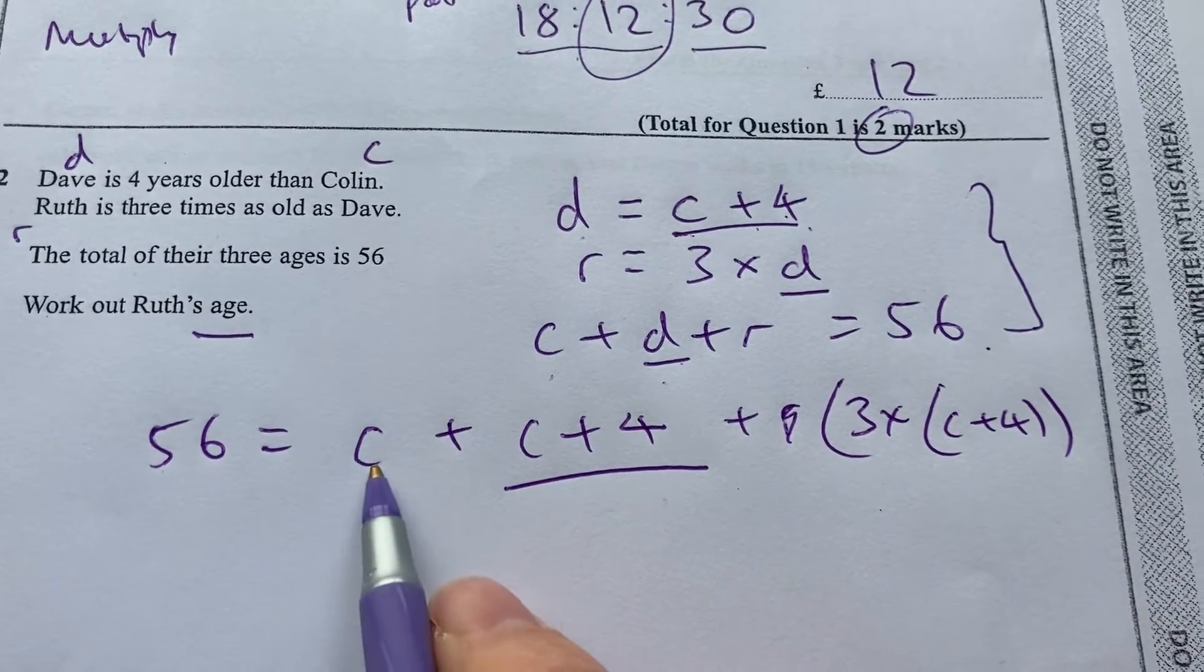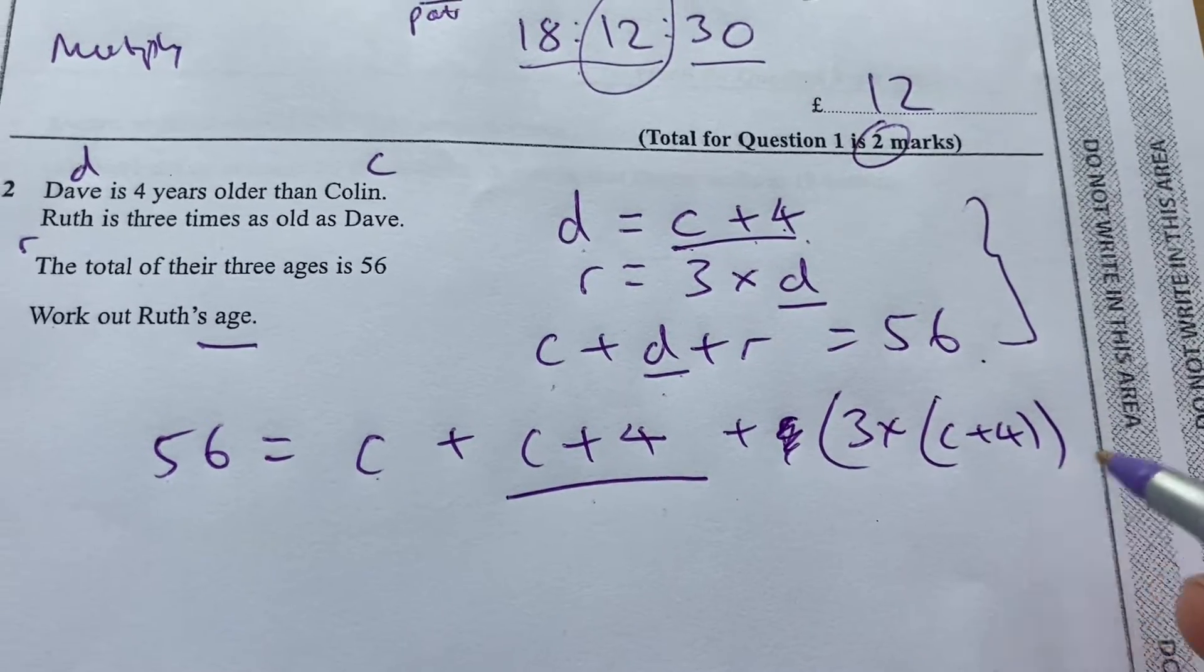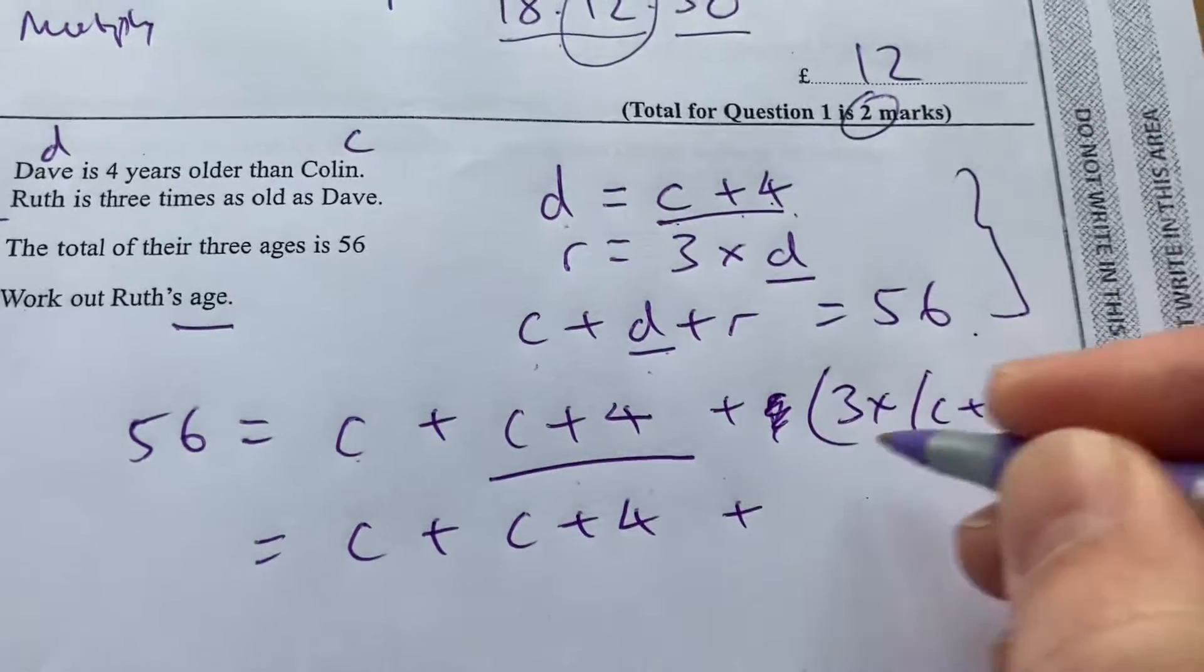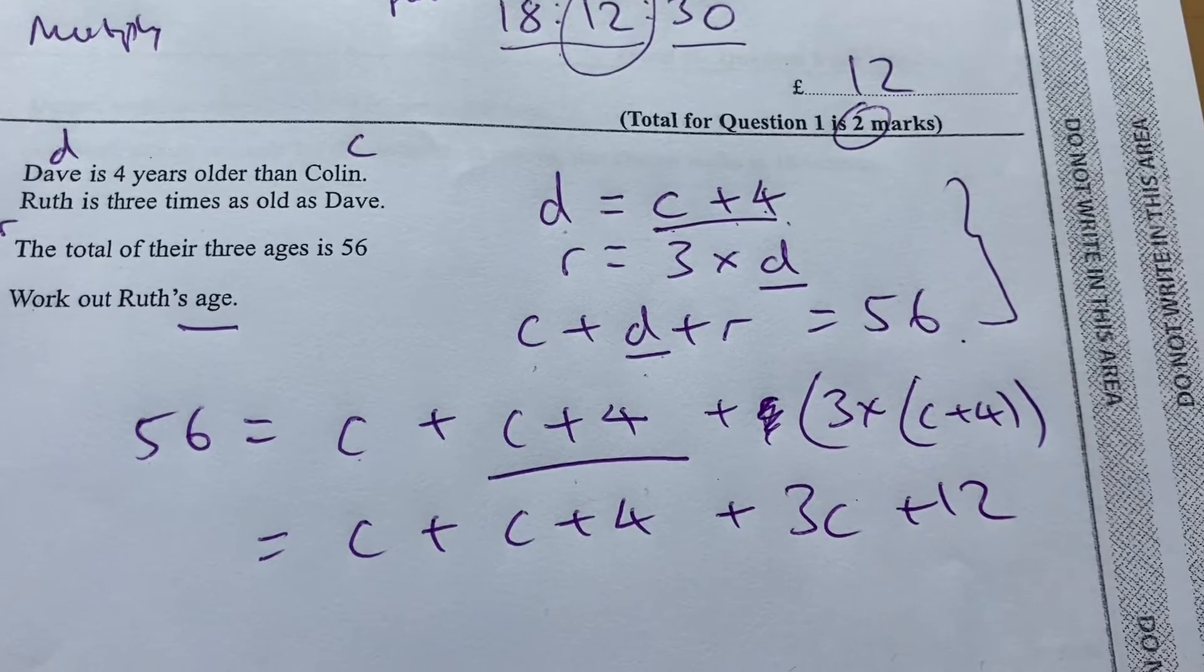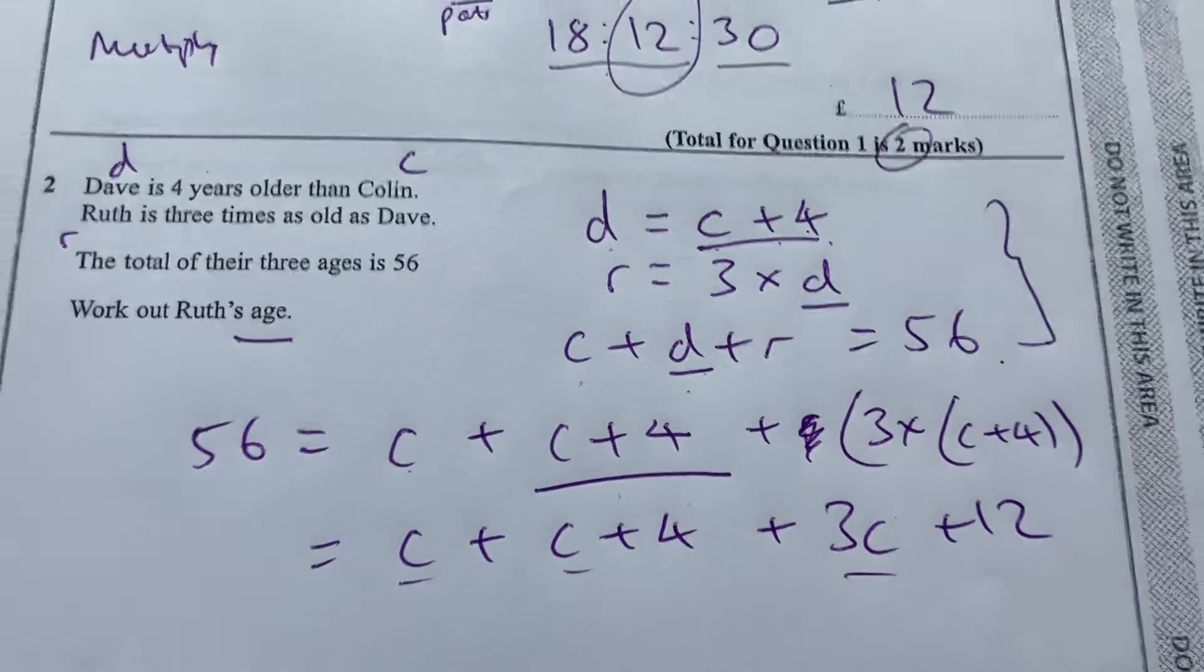So I've got Colin's age, Dave's age, and then Ruth's age. So C plus C plus C plus 4 plus 3C plus 12. So now I've only got one unknown in one equation. Now I know I can solve it.